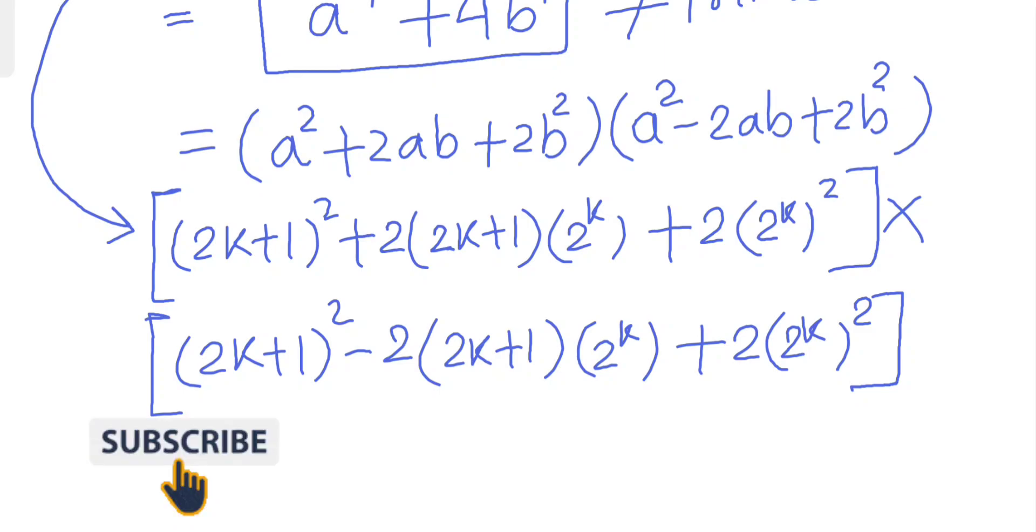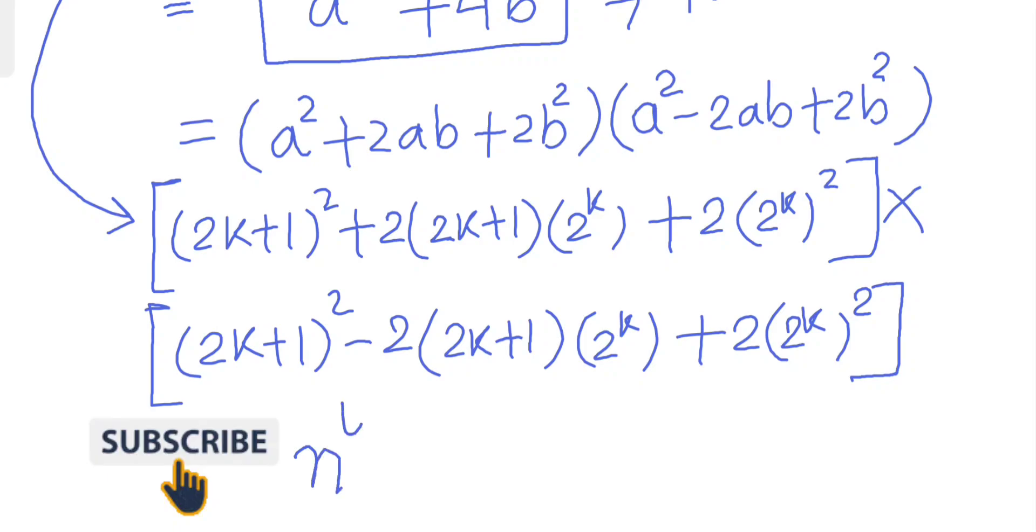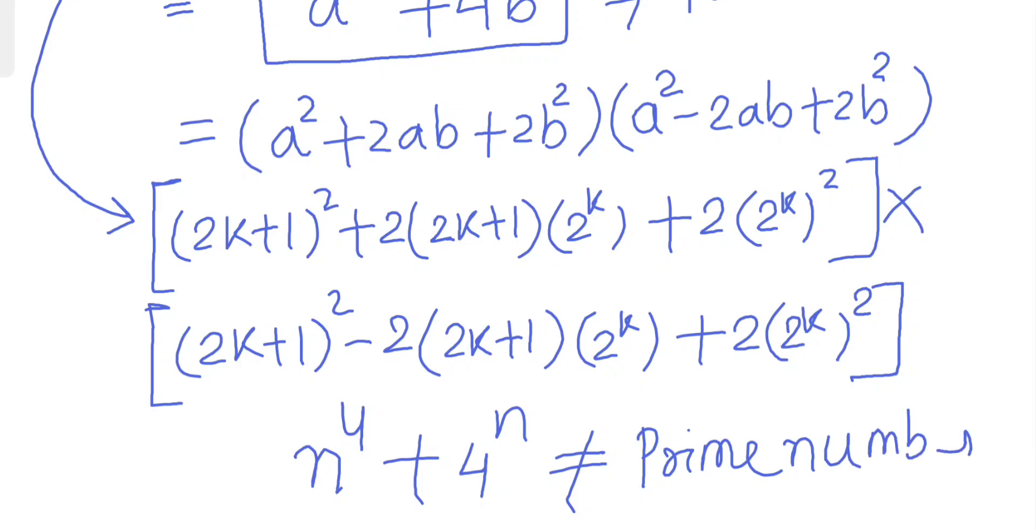No matter what you take for k, you can always factorize. Therefore we conclude that n to the power 4 plus 4 to the power n can never be a prime number except when n equals 1. Thank you for watching, see you next time.